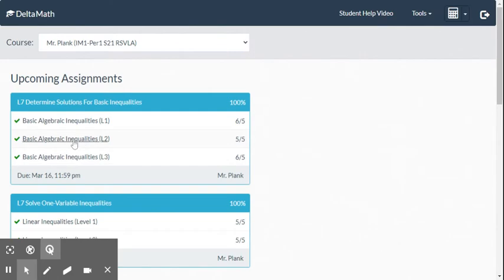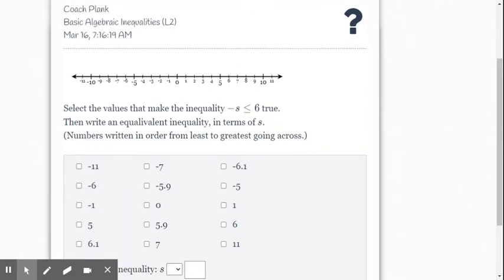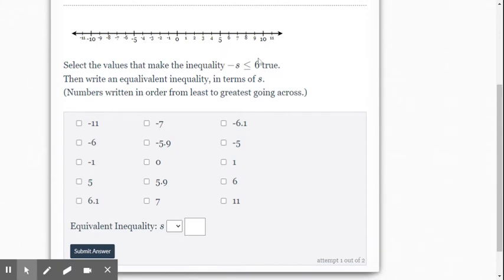So let's look at level 2. Now that gives us a negative variable, so negative s is less than or equal to 6. So what we have to do here is we have to multiply both sides by negative 1 or divide both sides by negative 1 in order to get positive s.